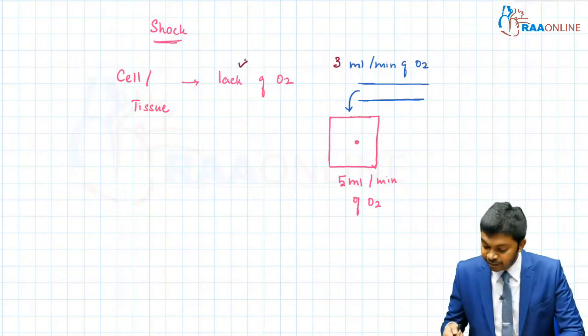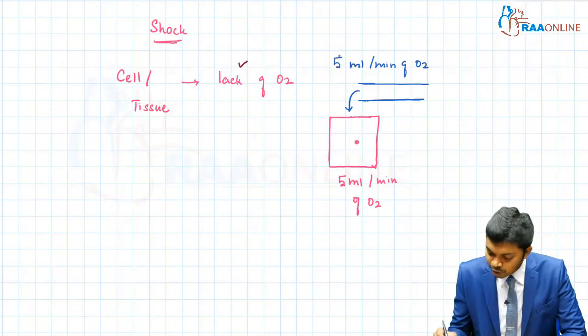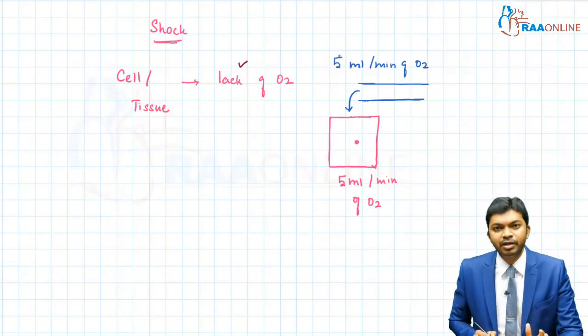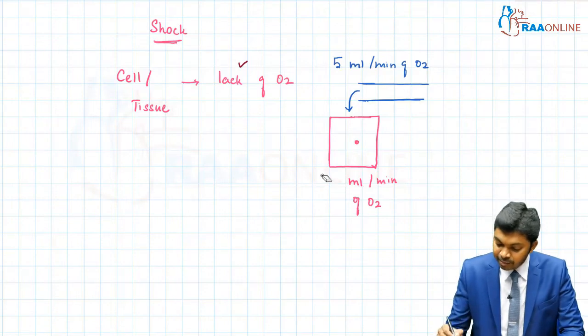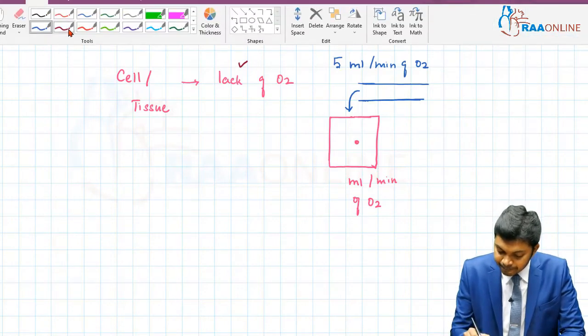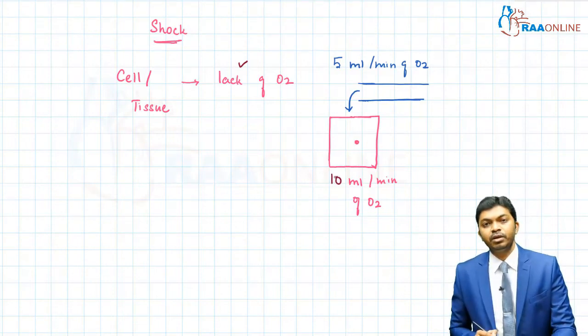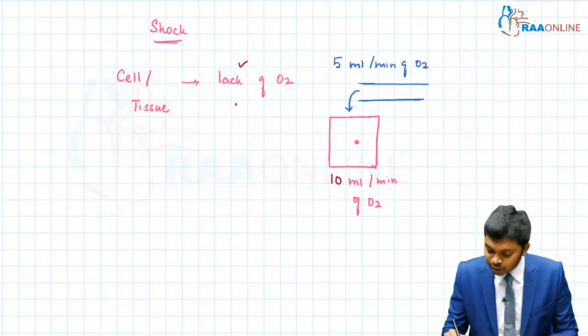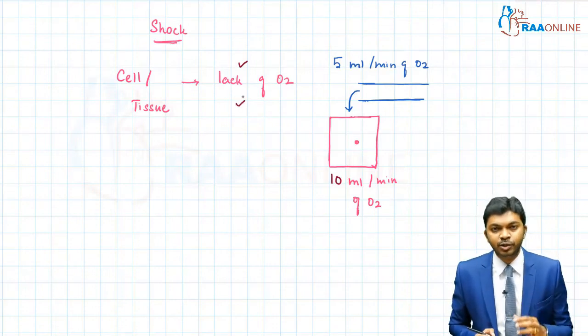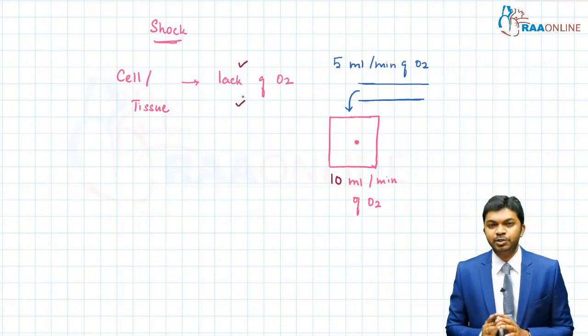On the other hand, the supply is normal, 5 ml. There is no problem in oxygen supply. But the cell's demand is tremendously increased. With the normal supply and the heightened demand, again, there is going to be a mismatch between oxygen delivery and oxygen utilization. This is again shock. You get this, people?